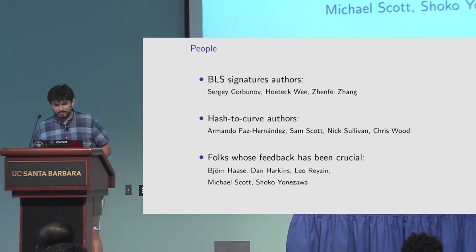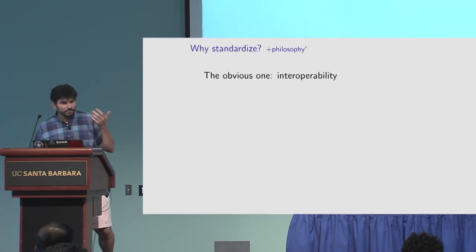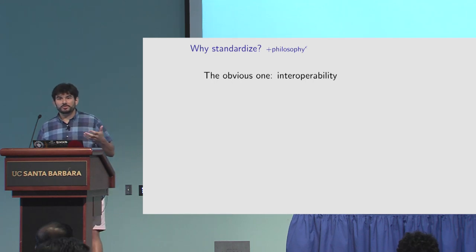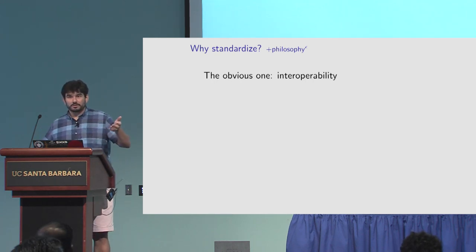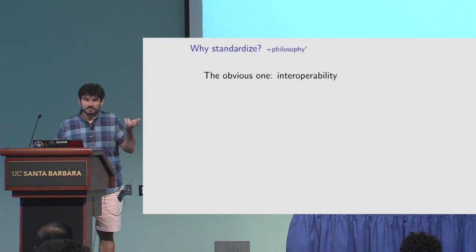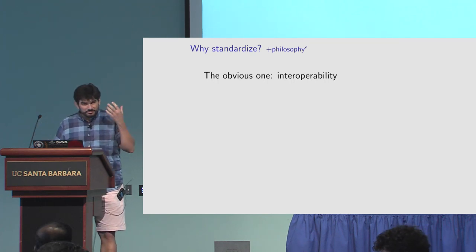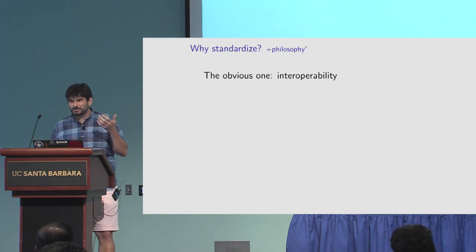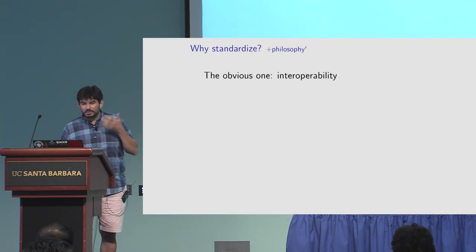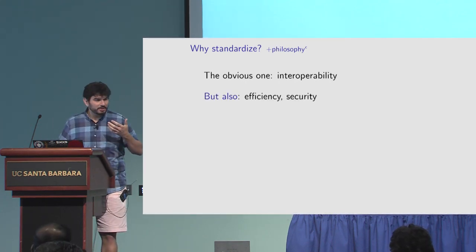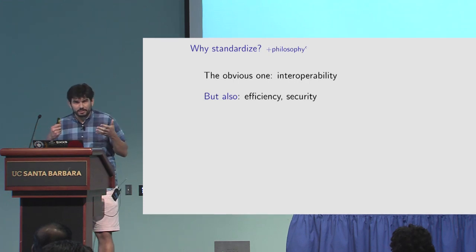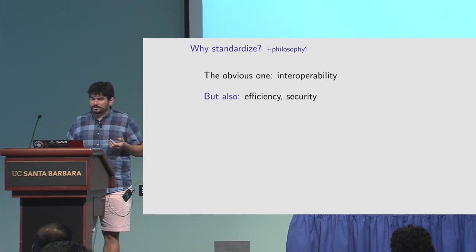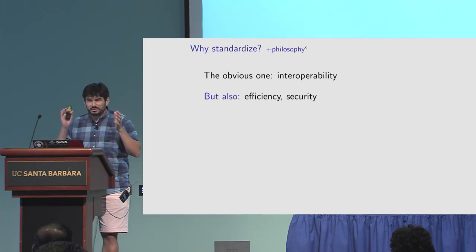Let's think about why we're standardizing things. One obvious reason is interoperability - if I tell you I'm going to be using HMAC-SHA-256 and I send you a MAC tag, you'll be able to understand and verify it. This means we want to be detail-oriented and precise about how things are specified. But maybe we should think of it as an opportunity: we can do careful thinking up front and make sure things are secure and efficient.